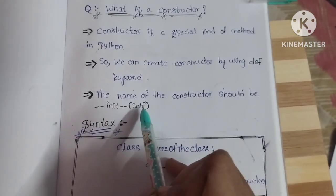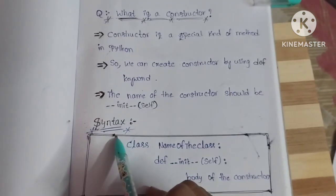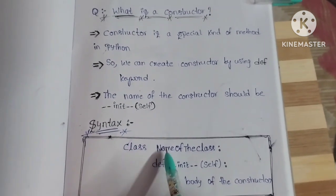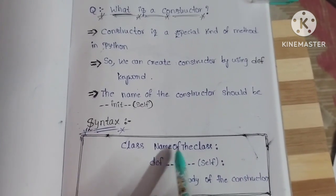We can create a class by using the class keyword. Class keyword follows the name of the class. After the name of the class, we should give the colon symbol.